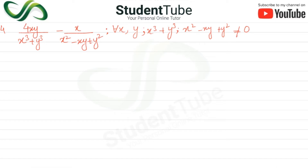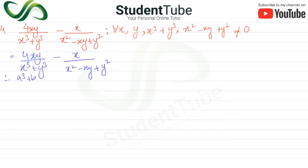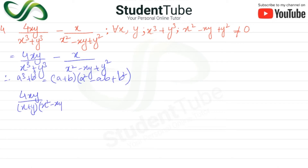We have 4xy upon (x³ + y³) minus x upon (x² - xy + y²). Applying the formula a³ + b³ = (a + b)(a² - ab + b²), the first term becomes 4xy upon (x + y)(x² - xy + y²), and the second term is x upon (x² - xy + y²).